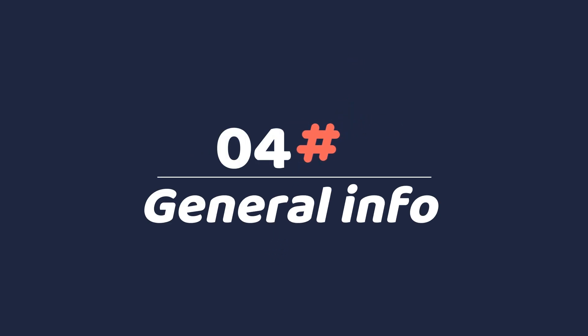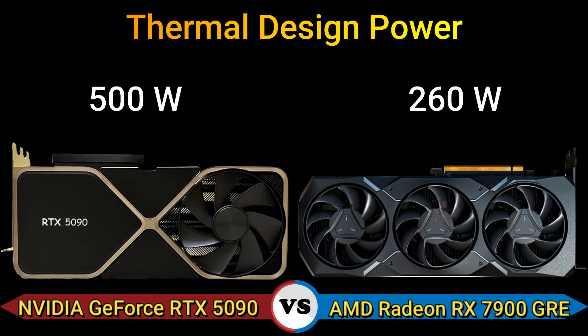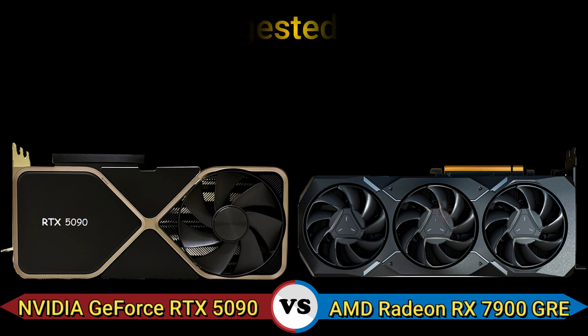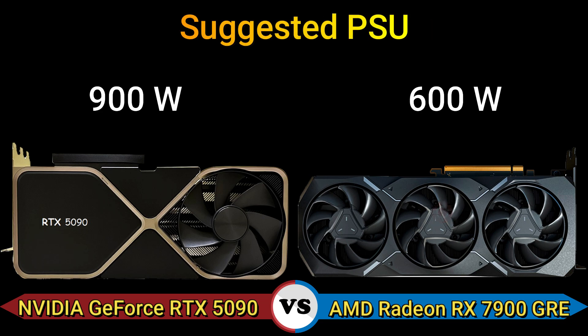Part 4, general information. Thermal design power: 500 watts and 260 watts. Suggested PSU: 900 watts and 600 watts.